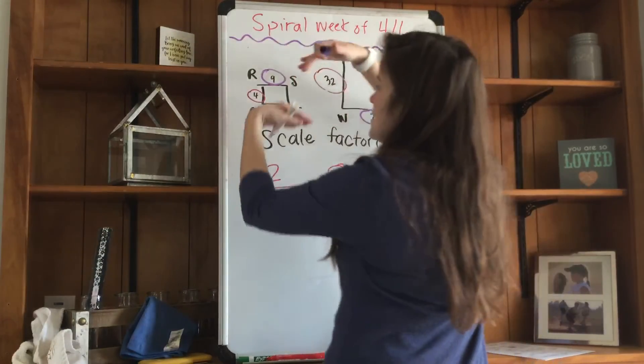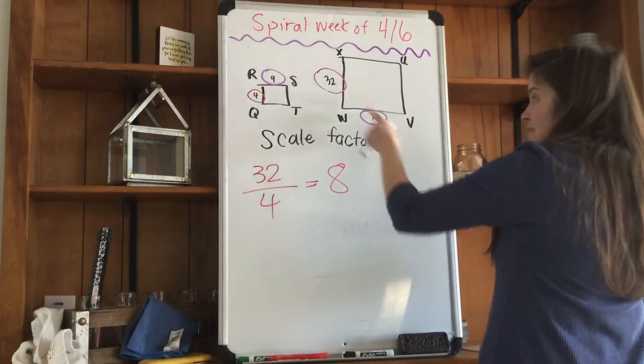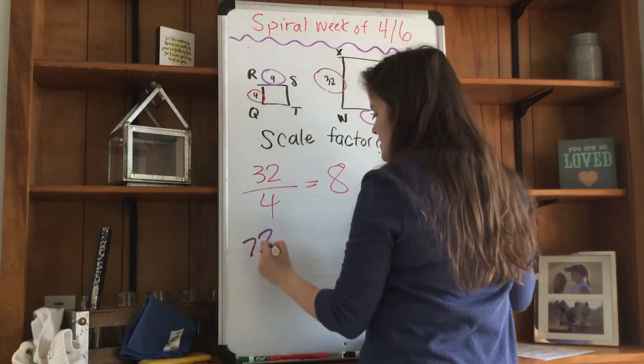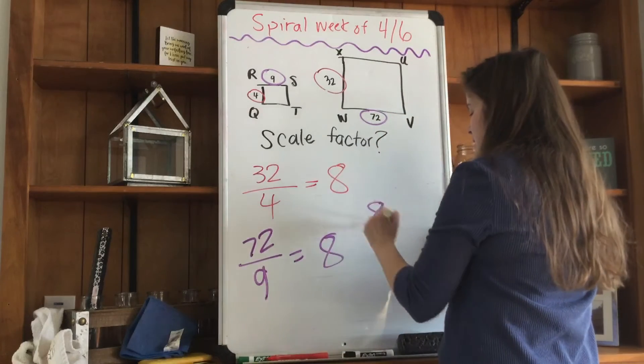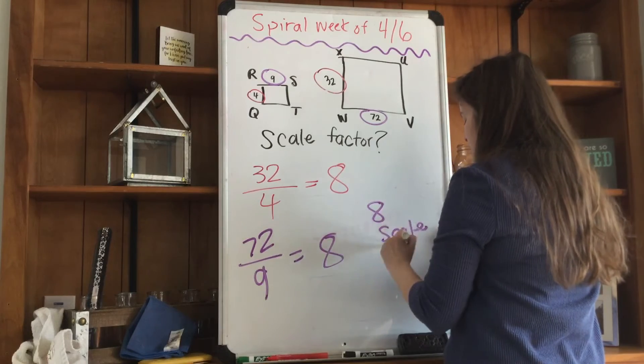So these two are the same, and these two are the same. I can use 72 and 9. 72 divided by 9 also gives me 8. So 8 is my scale factor.